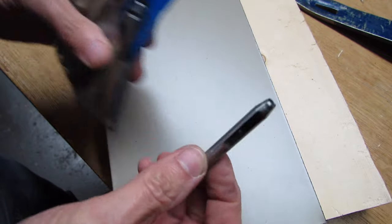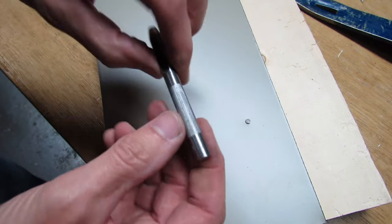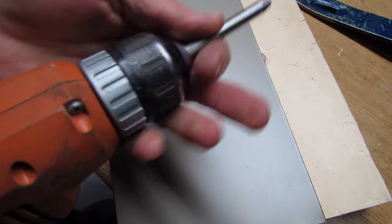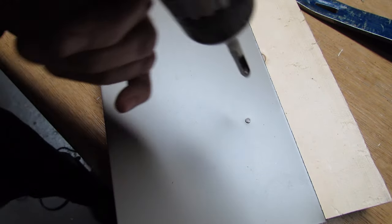What you want to do is pick the size that fits over top of the nail head, then take this and put it in your drill. Then just take the drill, put it over top, and give it a shot.